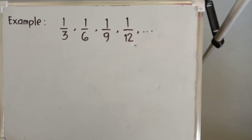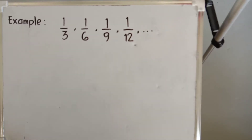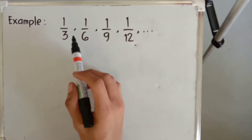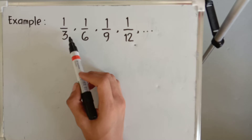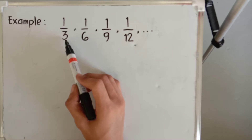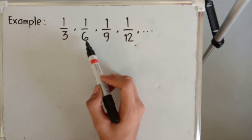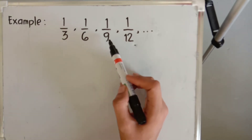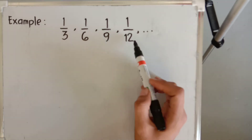Let's try to find if this given sequence is harmonic or not. We have the first term as one-third, the second term as one over six, the third term as one over nine, and the fourth term as one over twelve.